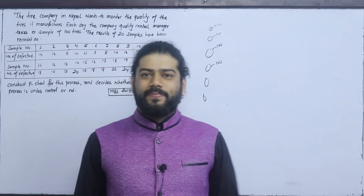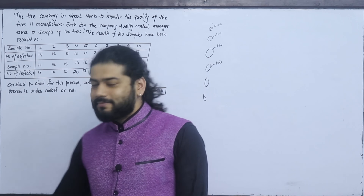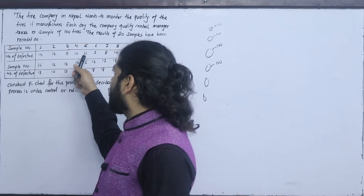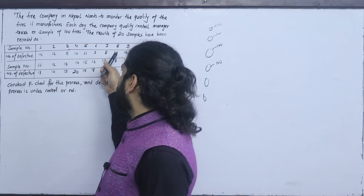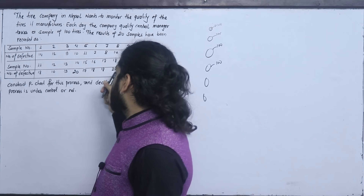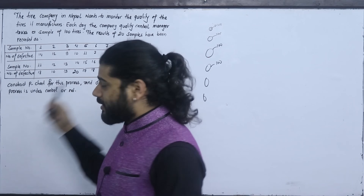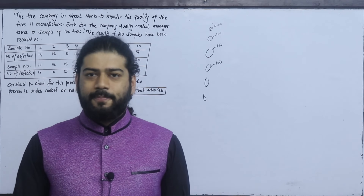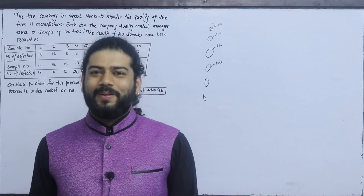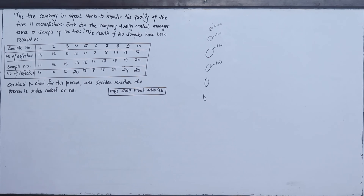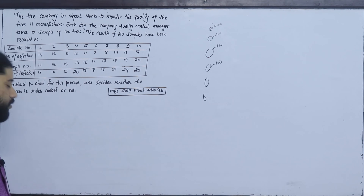The defect counts across the 20 samples are: 14, 12, 9, 10, 11, 7, 8, 14, 17, 18, 19, 20, 17, 18, 18, 22, 24, 25. Construct a P-chart for this process and decide whether the process is under control or not. This is MBS 2019 March, question number 4B.